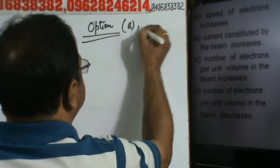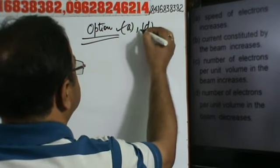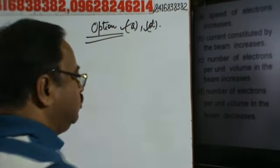So the correct options are option A — speed of electrons increases — and option D — number of electrons per unit volume in the beam decreases. These are the correct options.